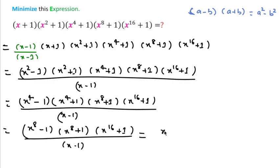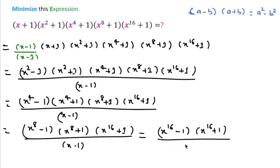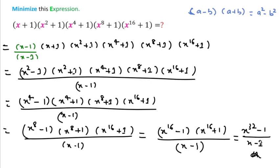Continuing, we can write (x¹⁶-1)(x¹⁶+1) over (x-1), which gives us (x³²-1) over (x-1). So this is the reduced form of the expression. Thanks for watching this video — please like, share, and subscribe to this channel.